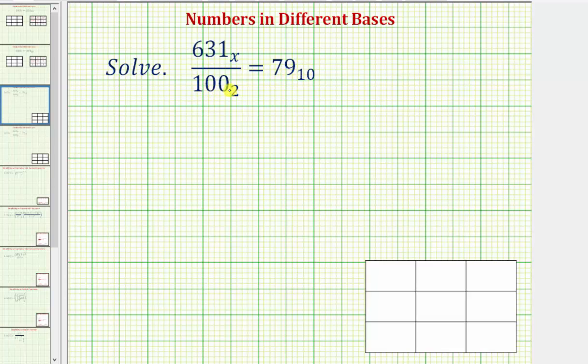Let's first rewrite 100 base 2 in base 10 so we have these two values with the same base. So because 100 has base 2, the digit on the far right would be in the 2 to the 0 or 1's place value, the 0 in the middle would be in the 2 to the first or 2's place value, and the 1 on the left would be in the 2 squared or 4's place value.